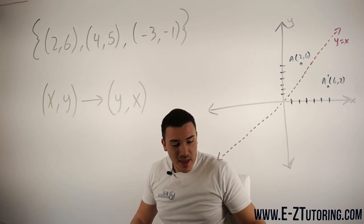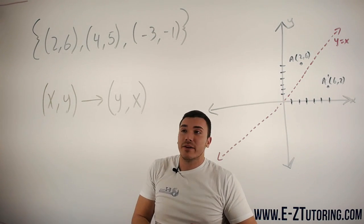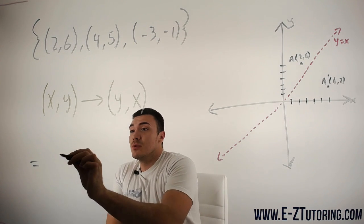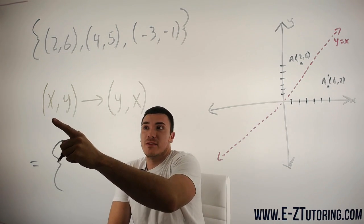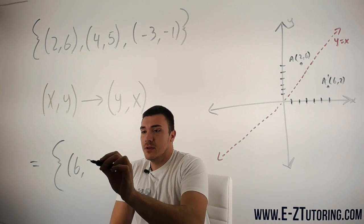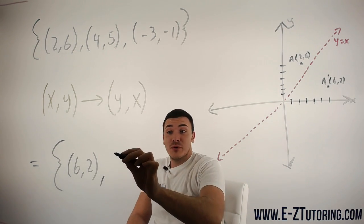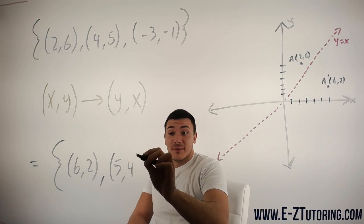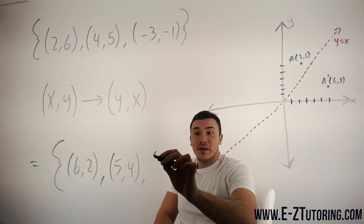So our inverse for this set of coordinates will be equal to: (2, 6) becomes (6, 2), just like we found over here; (4, 5) goes to (5, 4);